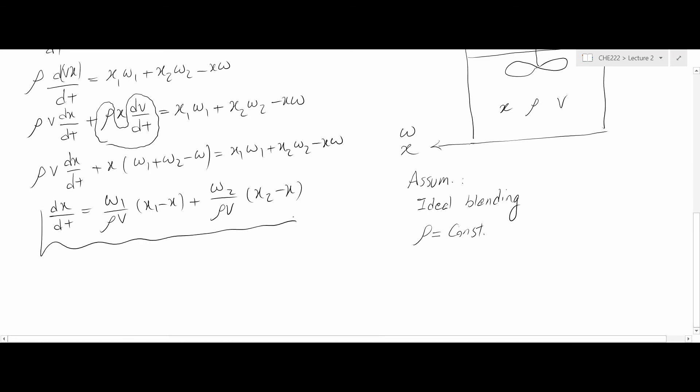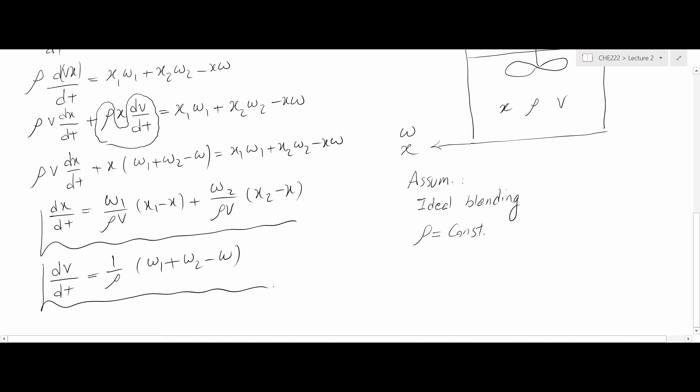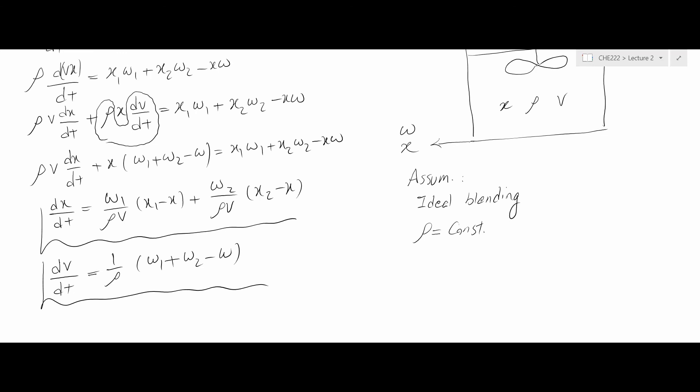This will be the final form of the conservation of component. The conservation of mass can be written in a similar format: dV/dt equals (1/ρ)·(W1 plus W2 minus W). With these two equations we define and model the transient or unsteady state of the system. In the next lecture I will derive the conservation of energy and present another example involving its application.